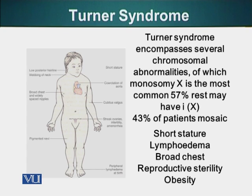Turner syndrome can be caused by several reasons. One is monosomy X — only one X chromosome — which accounts for 57% of these patients. The rest may have iso-X chromosome, in which both arms of the X chromosome are the same. I would also like to point out that some of these patients can be mosaic, where some cells may have a normal number of X chromosomes and others may have only one X chromosome.